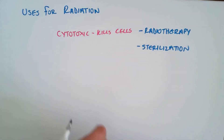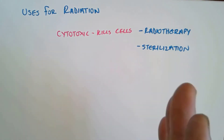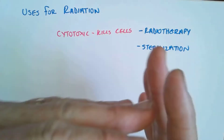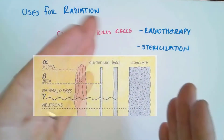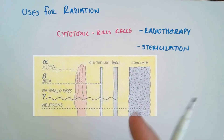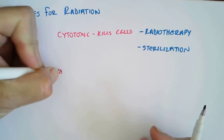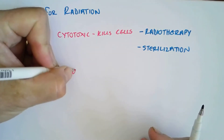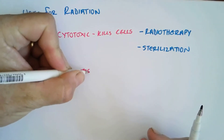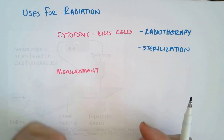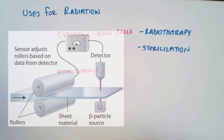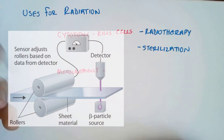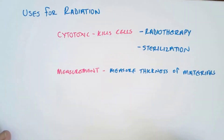Another property of radiation is that it gets stopped by different thicknesses of material depending on the type of radiation. For that reason it can actually be used for measurement. So radiation is used in industry to measure the thickness of materials — for example, the thickness of steel — where you have to measure something very, very finely.